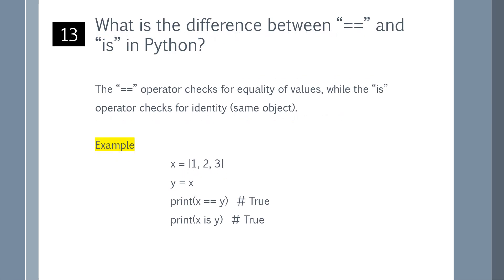What is the difference between the double equal sign and 'is' in Python? The double equal operator checks for equality of values, while the 'is' operator checks for identity of the same objects. You can refer to the example shown on the screen.